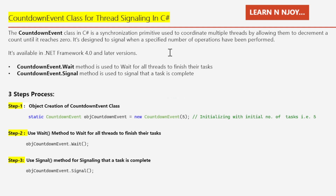Imagine a group of friends waiting for a movie to start. Each friend represents a task that needs to be completed before the movie begins. A CountdownEvent in C# is like a countdown timer — it starts with a specified count, say five, and as each friend finishes their task the countdown decreases. Once it reaches zero, the movie starts. It's available in .NET Framework 4.0 and later. The two important methods are: the Wait method, used to wait for all threads to finish, and the Signal method, used to signal that a task is complete.